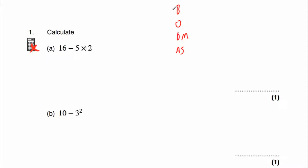So we've got 16 take away 5 multiplied by 2. We don't have any brackets, we don't have any orders — no squares or square roots. We do have a multiplication, so we do 5 multiplied by 2 first, which is 10. We write that beneath, and we still have 16 and take away, so we get 16 take away 10, which is 6. It's very important you do the multiplication first — not 16 take away 5 (which is 11) and then multiply by 2, as that would be wrong.